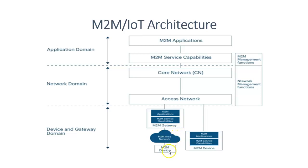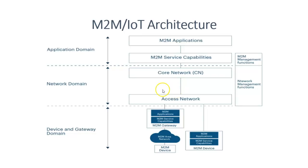M2M devices consist of sensors, actuators, and smart devices that generate data. The M2M area network is a local communication network connecting multiple M2M devices, using technologies like Zigbee, Bluetooth, LoRa, and Wi-Fi. The M2M gateway acts as a bridge between the device and the core network, enabling communication and processing some data locally. M2M service capabilities provide essential functionalities like data aggregation, local processing, security, and device management.